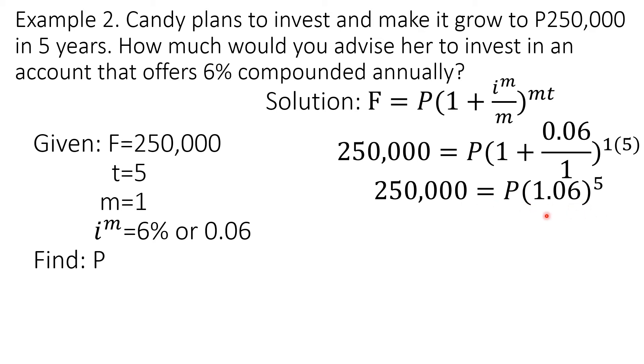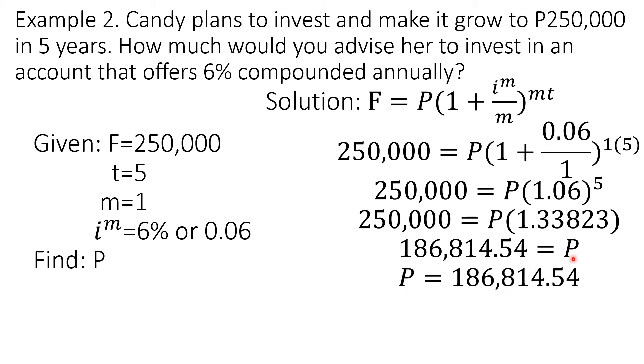Let us raise 1.06 to the 5th power. We'll get 1.33823. And then to solve for P, we'll divide both sides by this number. Using our calculator, you'll get 186,814.54, rounded to the nearest centavo, equals P. That's the money that Candy should invest: 186,814 pesos and 54 cents.